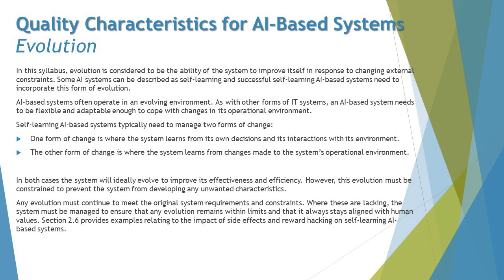One form of change is where the system learns from its own decisions and its interaction with its environment. The other form is where the system learns from changes made to the system's operational environment. For example, the first form of learning from its own decisions could be about face recognition or face ID on cell phones today — whether iPhones or Androids. Have you ever wondered that your face is not exactly the same no matter how long you've been using the phone?